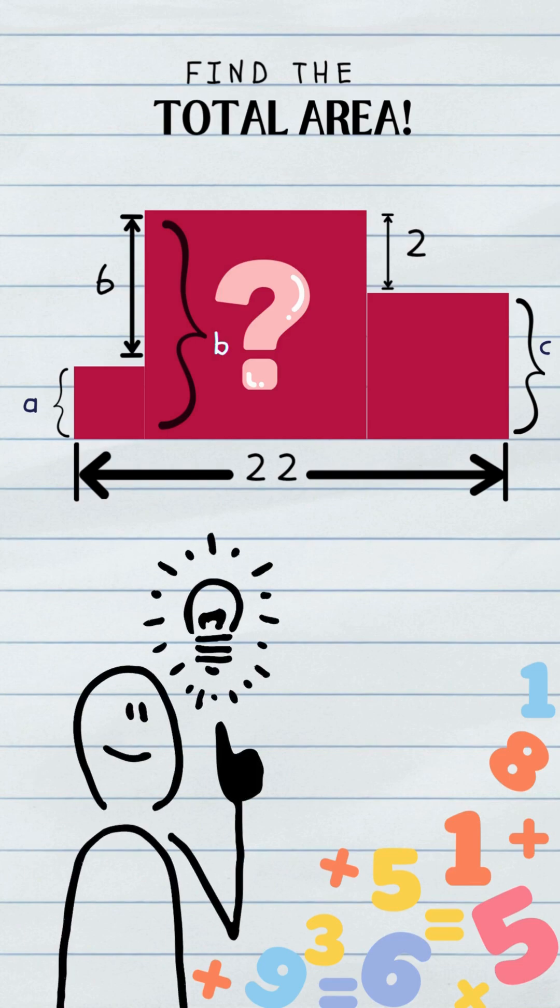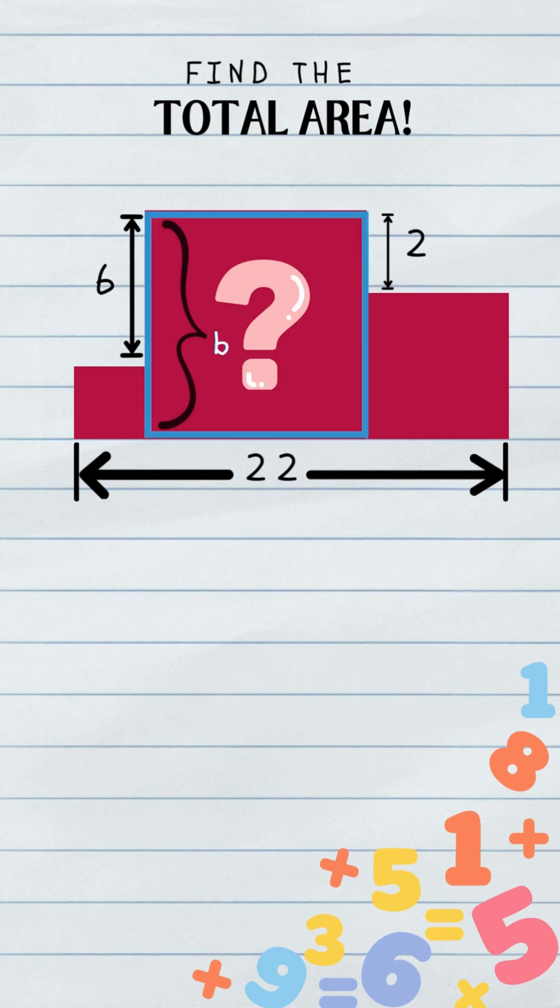Let's ditch that alphabet soup and make one variable the hero. Here's the hack. Forget A and C. The middle square, B, is our main character. Everything is about to revolve around B.